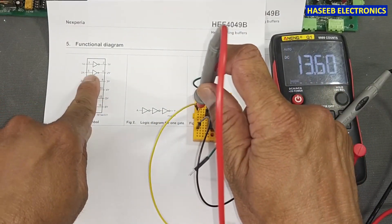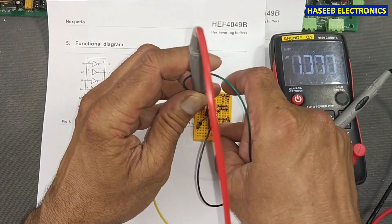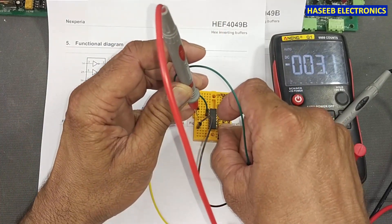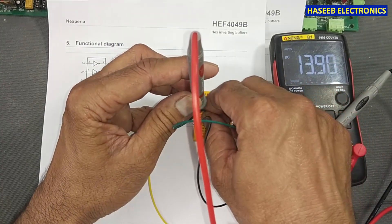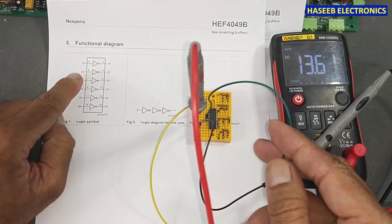So the first gate is okay. We will connect to pin 4. Pin 4 is 1, 2, 3, 4, and we will give this input to pin 5. Pin 5 is input.